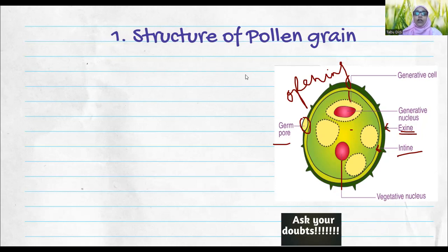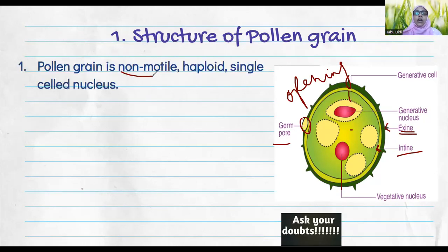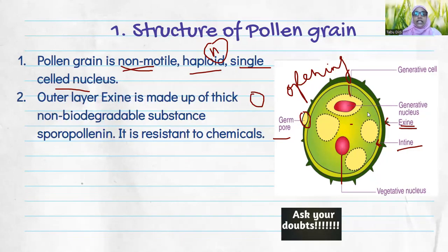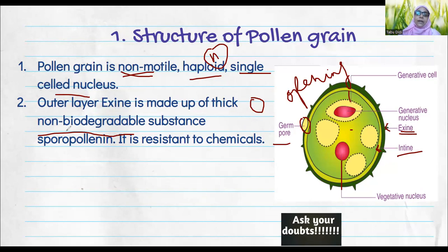Pollen grains cannot move on their own — they require agents, either non-living agents like wind and water, or living agents like butterflies, birds, and bats. They are haploid in nature, meaning half the number of chromosomes. They are single-celled. The outer layer of the pollen grain wall is made up of a thick, non-biodegradable substance, acting as a tough layer for protection against adverse environmental conditions and for attachment to the stigma.